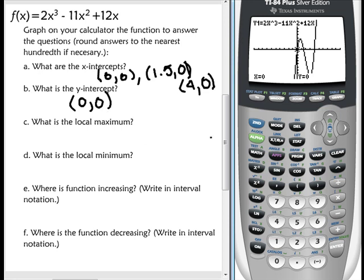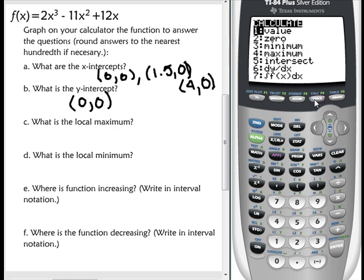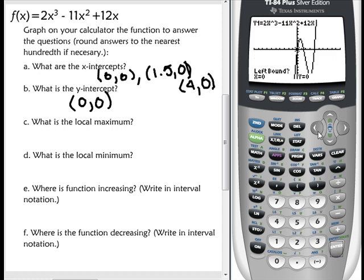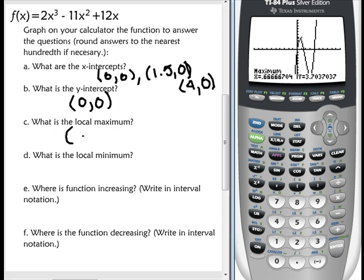What is the local maximum? So I'm going to do 2nd, calc, go down to maximum, and hit enter. And now I want my cursor to the left side of the maximum, and it's pretty much on the left there. So I'm going to hit enter. Now to the right side of that maximum, and hit enter, and enter again. Now the question wants me to round to the nearest hundredth. That's two decimal places. So my local maximum will be 0.67 comma 3.70.